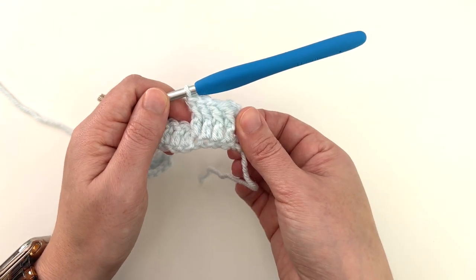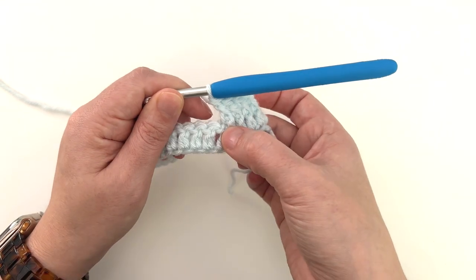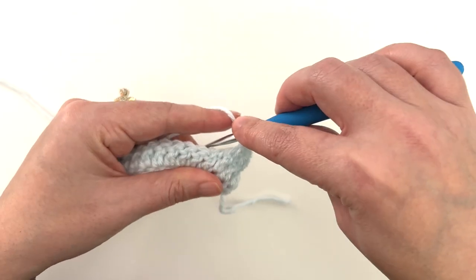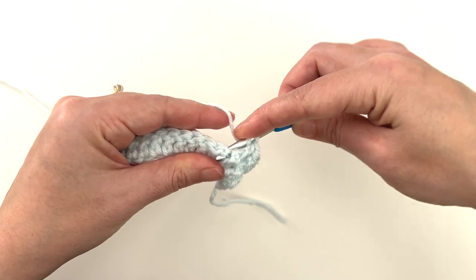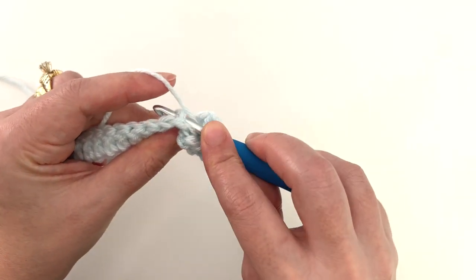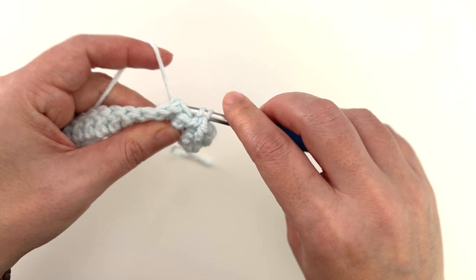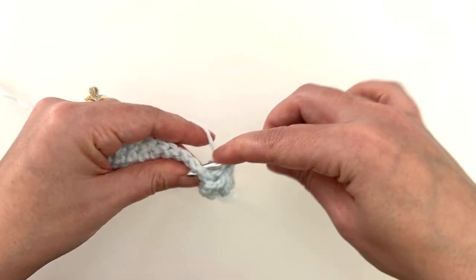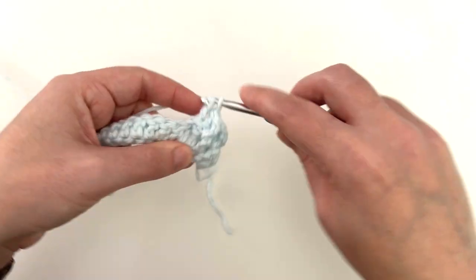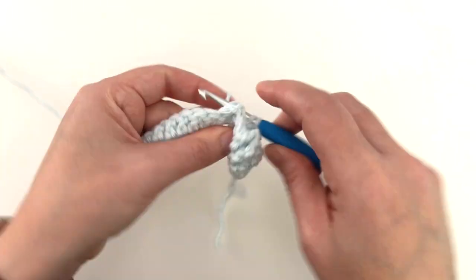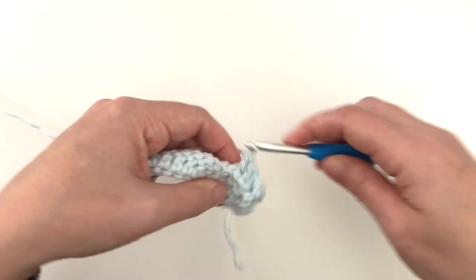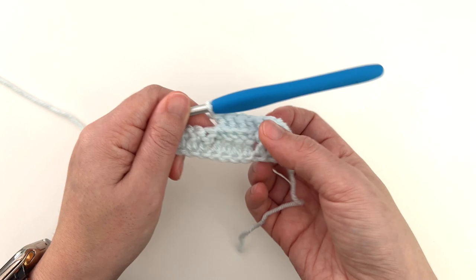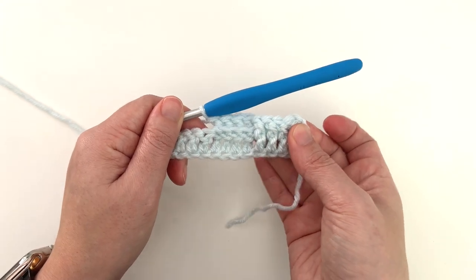So there we have our four front posts and now we're going to do four back post. For the back post you insert your hook from the back to the front and push your stitch to the back.